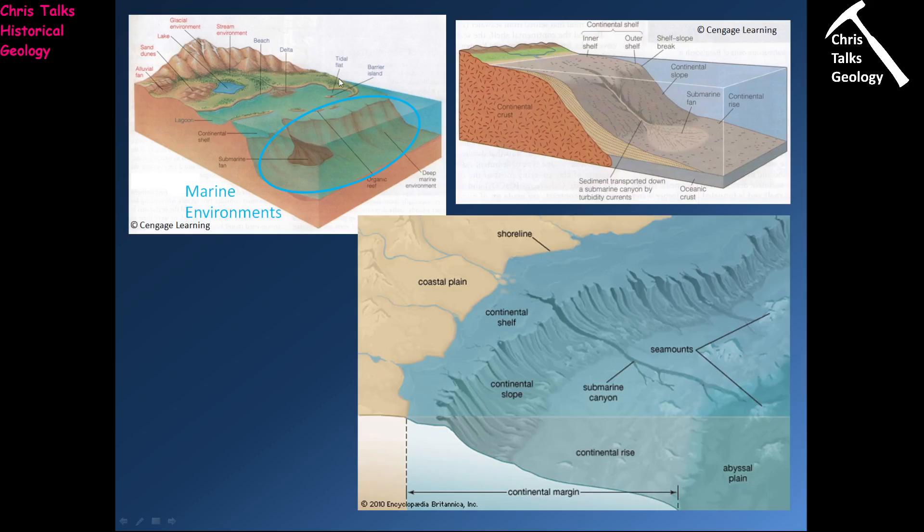Here we are in the marine environment. In terms of the marine environment itself, it's split into these broad areas. We have the continental shelf, which is underlain by continental crust, and the water depth is typically between 0 and 200 metres, so quite shallow. That's the kind of water depth through which light can penetrate, providing the water isn't too cloudy.